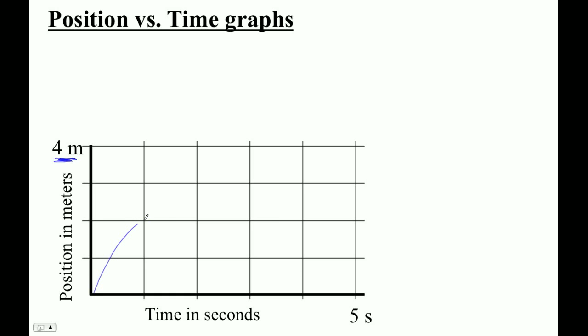Basically a graph like this just shows you where some object is. At one second it was at two meters, and at two seconds it was at a little less than 1.8, at three again at 1.8, four seconds, etc.